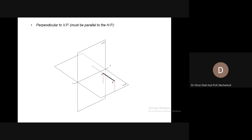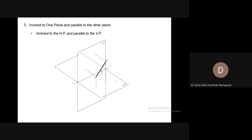So, line perpendicular to the vertical plane must be parallel to the horizontal plane, as we can see from its ends' distances. Inclined to one plane and parallel to the other — the line can be parallel to one plane and at the same time inclined to the other plane.